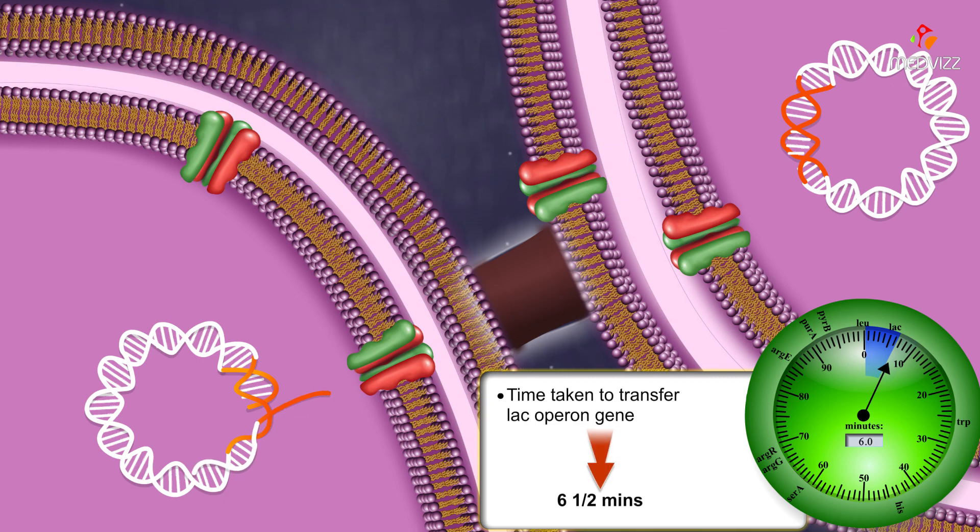Conjugation has to occur for at least 6.5 minutes in order for the lac operon to transfer. This tells us that the lac operon is farther from the fertility factor than the leucine gene.